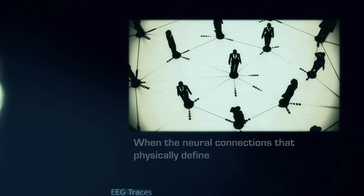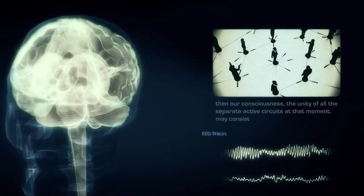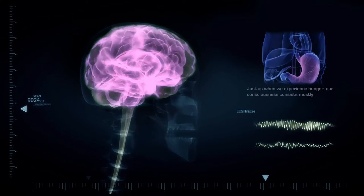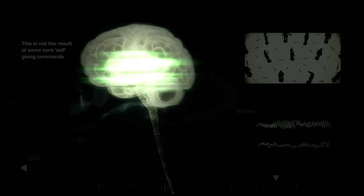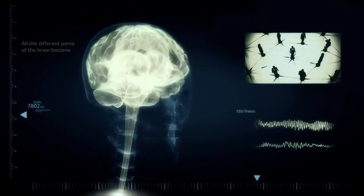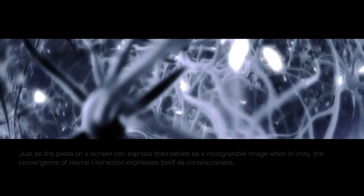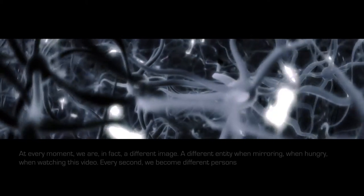This can create a profound confusion when mirroring others. When the neural connections that physically define our belief system are not strongly developed or active, then our consciousness, the unity of all the separate active circuits at that moment, may consist mainly of activity related to our mirror neurons. Just as when we experience hunger, our consciousness consists mostly of other neural interactions for consuming food. This is not the result of some core self giving commands to different cerebral areas. All the different parts of the brain become active and inactive and interact without a core. Just as the pixels on a screen can express themselves as a recognizable image when in unity, the convergence of neural interaction expresses itself as consciousness. At every moment we are in fact a different image, a different entity when mirroring, when hungry, when watching this video. Every second, we become different persons as we go through different states.